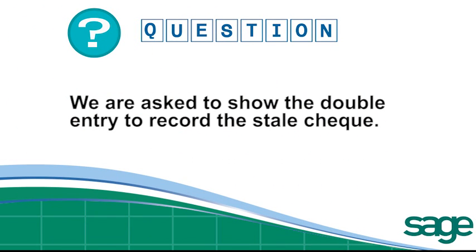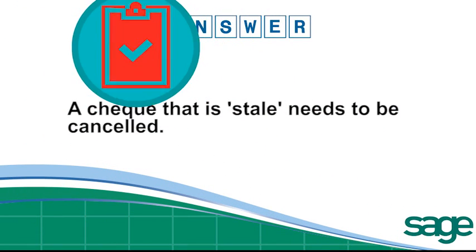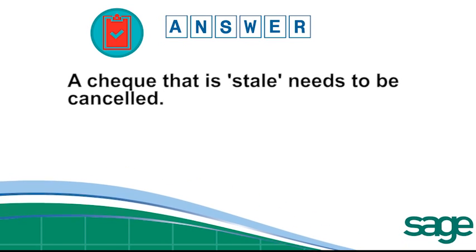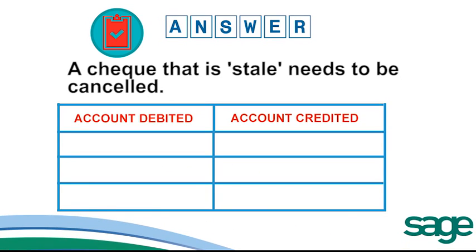We're asked to show the double entry to record the stale check. A check that is stale needs to be cancelled. So if we originally put it in as a check decreasing bank, we must now increase bank on the debit side by R750. But there are two accounts involved. The check was for donations, so donations is the other account affected in our double entry. So we decrease donations on the credit side.